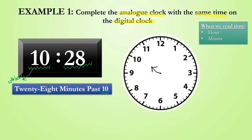So 1 multiplied by 5 is 5, 2 multiplied by 5 is 10, 15, 20, 25, 26, 27, 28. Let's add the minute hand in a way that points to the 28th marking.